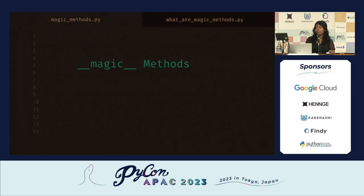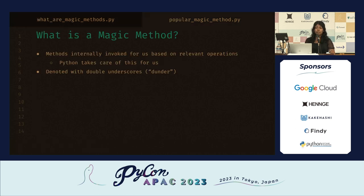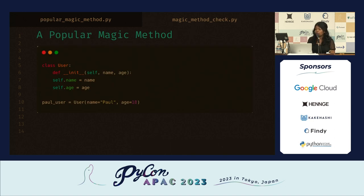Our final topic is the magic method. A magic method is basically a method that is internally invoked for us by Python, based on the operations we're using in our own code. We can identify it with a double underscore appended and pre-appended to the function's name — also represented as dunder methods. Let's look at a popular one: dunder init. We have a class User, and dunder init initializes our new class instance with self, name, and age. Name and age are passed to the class constructor. Self is actually created by another magic method called dunder new — dunder new creates the class instance, and dunder init initializes it. We set up our instance to store the name and age passed to the constructor.